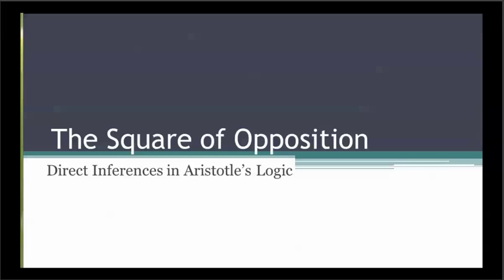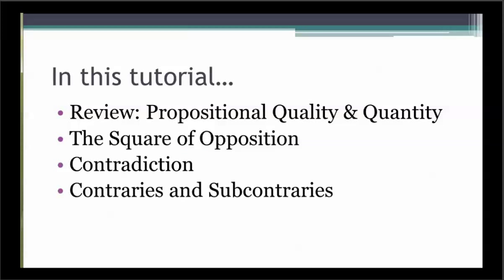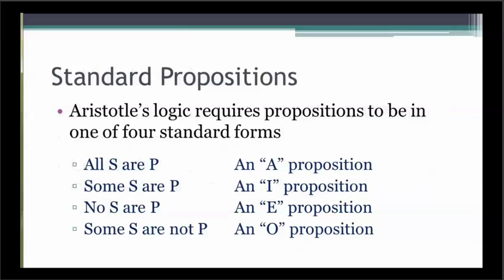Hi, this is Mick Pressnell, and this is a tutorial on the square of opposition and direct inferences in Aristotle's logic. In this tutorial, we'll review propositional quality and quantity, we'll look at the square of opposition, we'll look at contradiction, and we'll look at the relationships between contraries and subcontraries. Remember from the previous tutorial that the application of Aristotle's system of logic requires that we start with propositions in one of four standard forms.